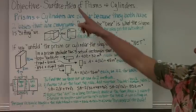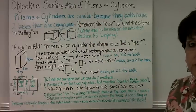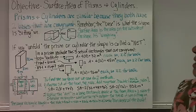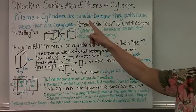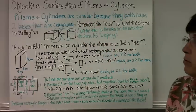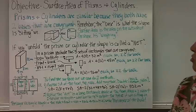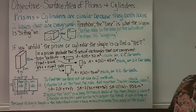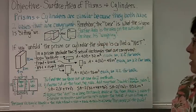Today's objective is the surface area of prisms and cylinders. Prisms and cylinders are similar because they both have two bases that are congruent. Remember, the base is what the shape is sitting on.